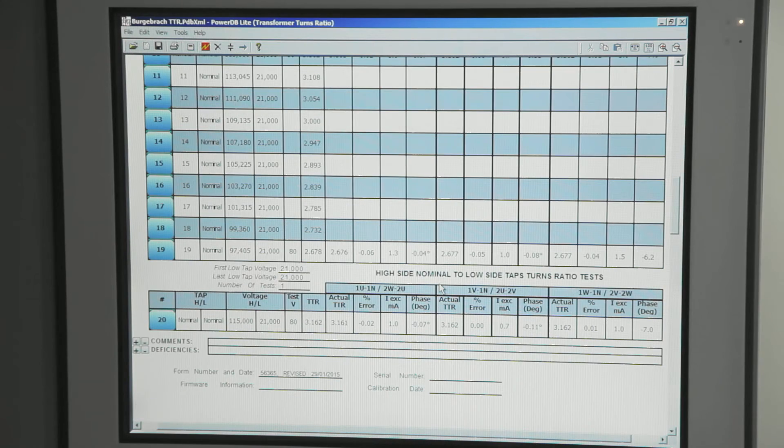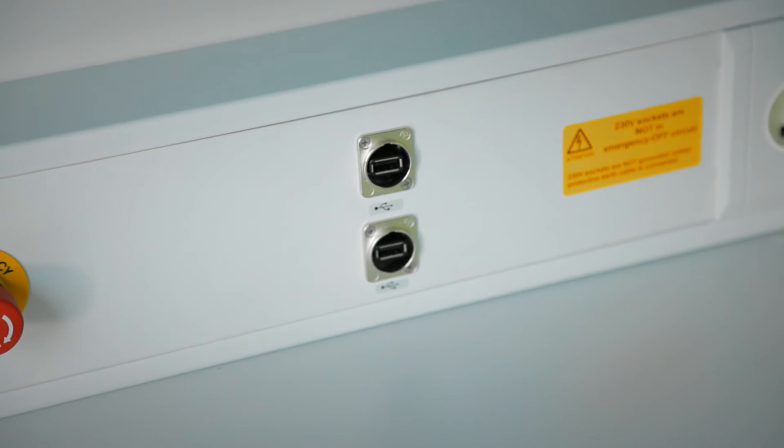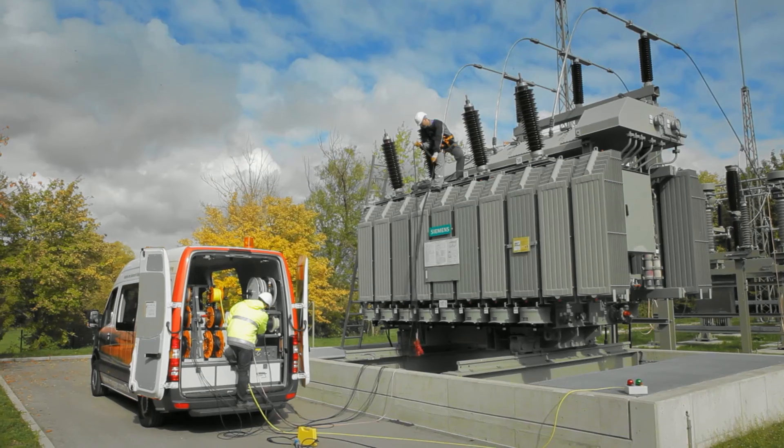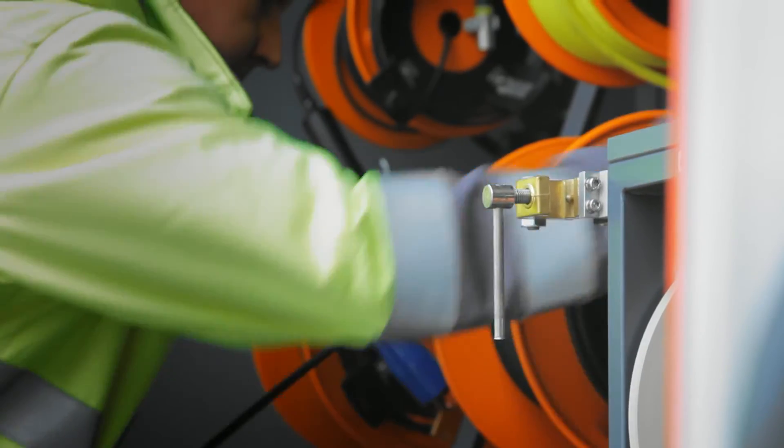An optional power generator driven by the van's engine can provide enough energy to complete all tests autonomously. After test completion, finally disconnect the test leads and roll them back onto the reels.